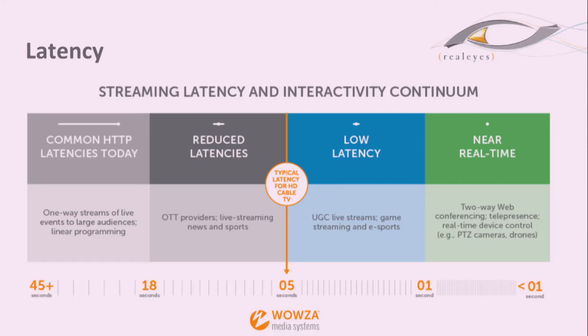Reduced latency is anywhere from 18 to 5 seconds, and that's where a lot of people wish they were but aren't oftentimes. Low latency — we really count that as anything less than 10 seconds. Five seconds is the typical latency for HD cable, so we're talking action on the field to seeing it on your TV screen — not going through the internet — is actually about a five second latency from lens to screen. So anything at that or below is considered close enough to real time. If you're beating the TV, then you're doing something really right — and probably doing it very dangerously.